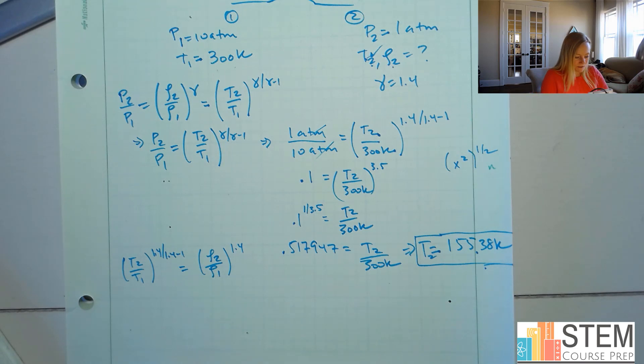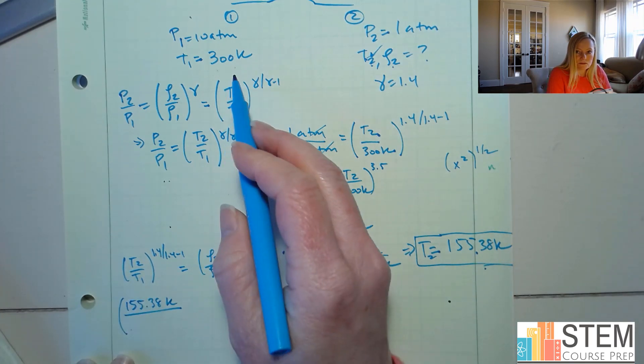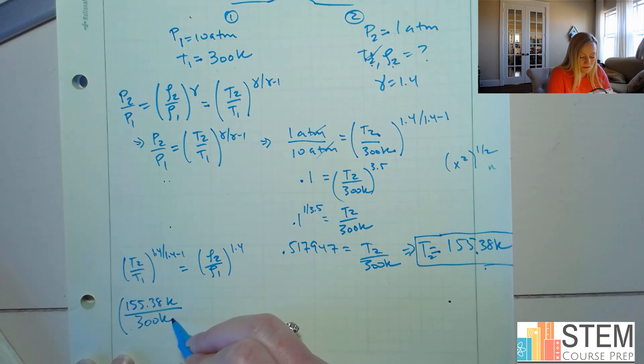All right, so let's go ahead and plug in our values. So let's start over here. So I'm going to have 155.38. That's Kelvins. T1, we know, is 300. So let's put 300 in there.